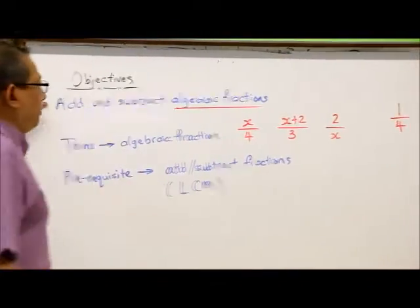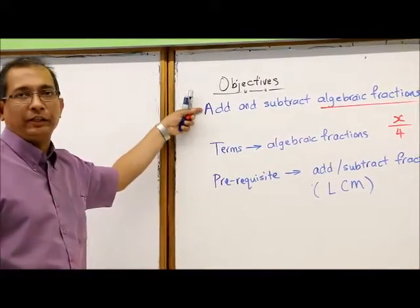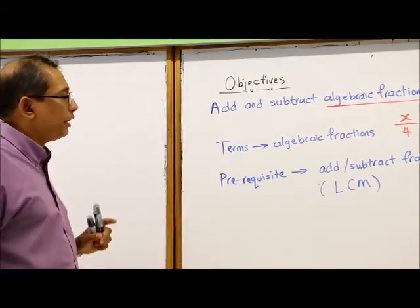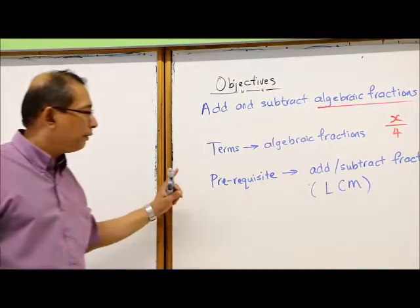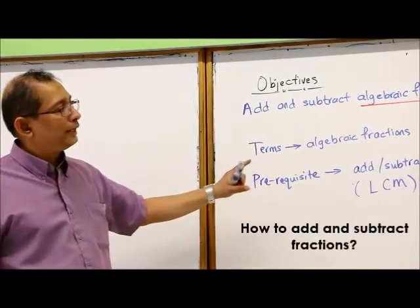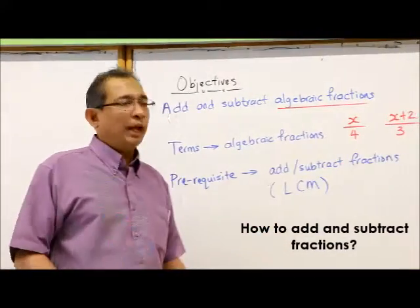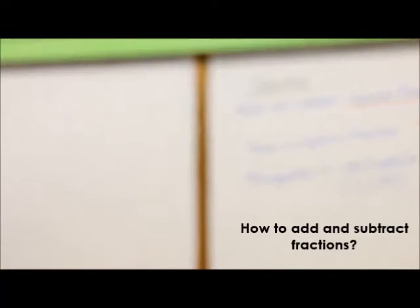So x over 4 is what we call an algebraic fraction. Now another example could be, let's say, x plus 2 over 3. It's another example of algebraic fraction. We can also have the denominator. For instance, 2 over x is also an algebraic fraction. Now please take note that for this lesson, we are going to add and subtract algebraic fractions. Before we do that, we need to actually revisit the prerequisite, which is how to add and subtract fractions, especially when the fractions have different denominators.